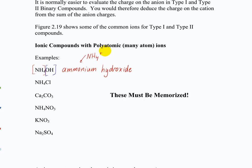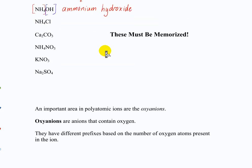Knowing that, let's name some examples. Na2CO3 is sodium carbonate. NH4Cl is ammonium chloride. CaCO3 is calcium carbonate — calcium ion and carbonate ion. NH4NO3 is ammonium nitrate. KNO3 is potassium nitrate. Na2SO4 is sodium sulfate. Make sure you know those common ones, but you'll also need to know less common ones like sulfite, nitrite, azide, chlorate, and so on.